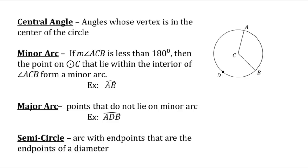Next, let's talk about a minor arc. If the measure of angle ACV is less than 180 degrees, then all the points on circle C that lie within the interior of the angle form a minor arc — an arc with a central angle less than 180 degrees. A major arc is all the points that do not lie in a minor arc, so it would be an arc with a central angle greater than 180 degrees.